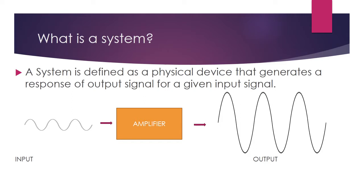Next, we are going to see what is a system. A system is used for processing the signal. If you give an input signal to a system, it will process that signal and give the output. For example, consider an amplifier — it is used for amplification of a signal. The input signal is given, and the amplifier output is the amplified input signal. So this is called a system; in short, a system is used for processing the signal.